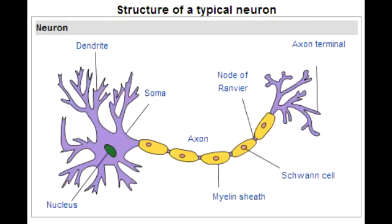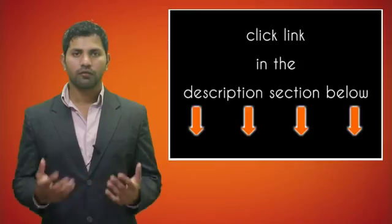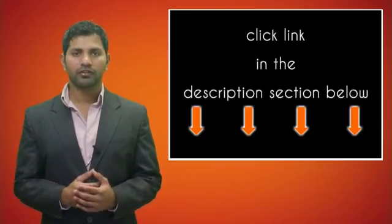What is plasmapheresis? Plasmapheresis is a method of removing blood plasma from the body by withdrawing blood, separating it into plasma and cells, and transfusing the cells back.